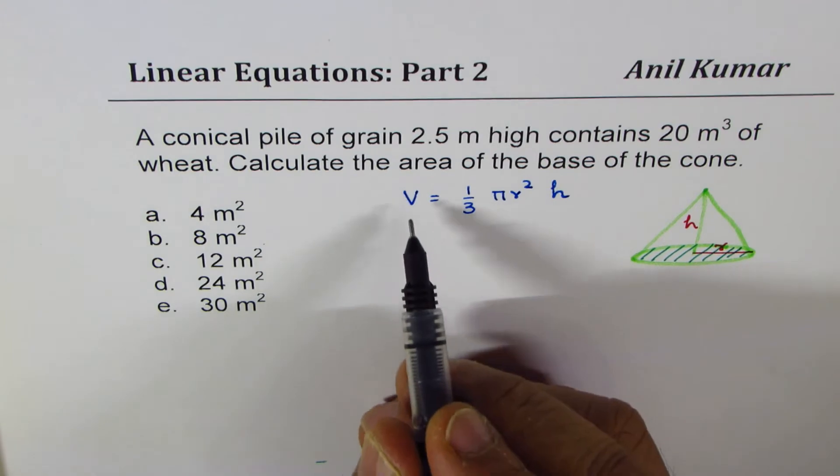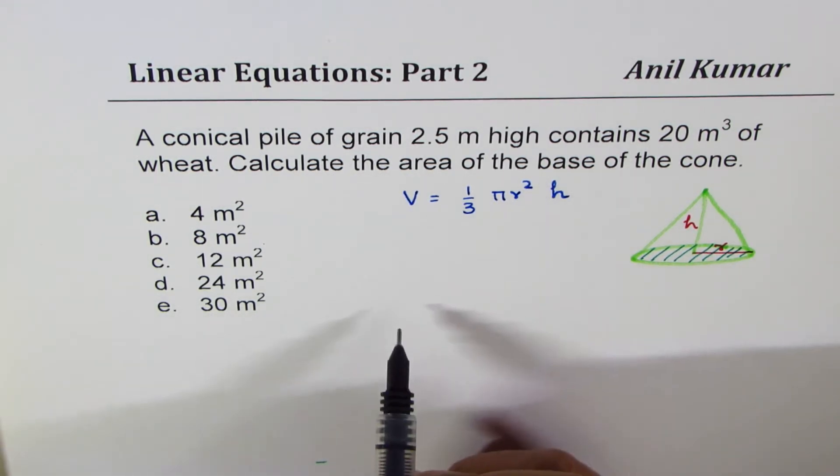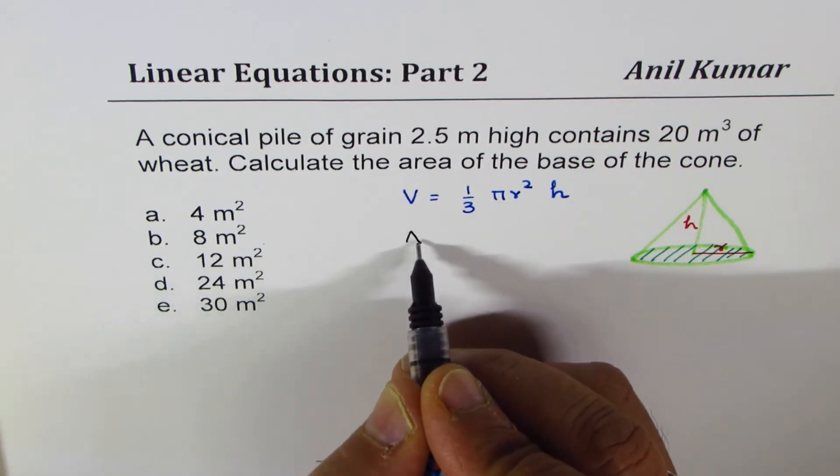Let's try to do it. We will reorganize this equation, which is V = (1/3)πr²h.